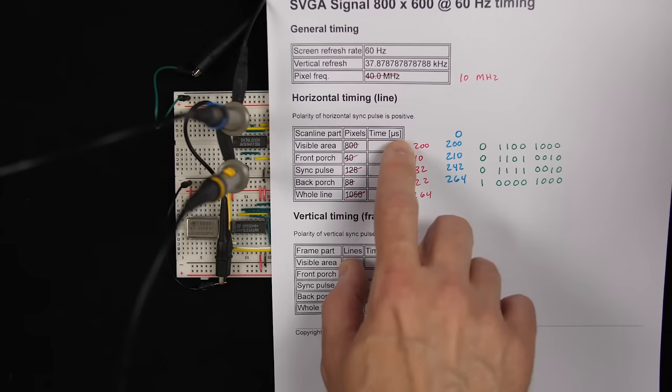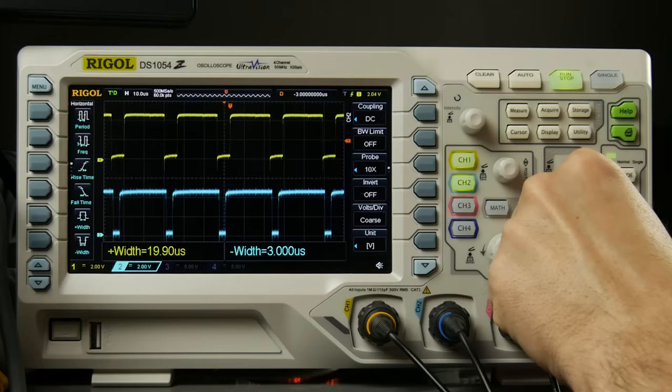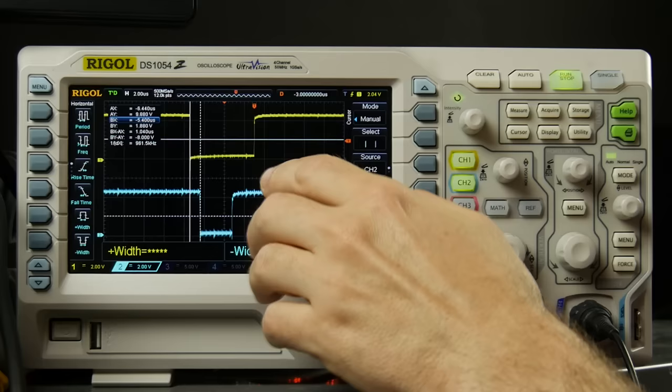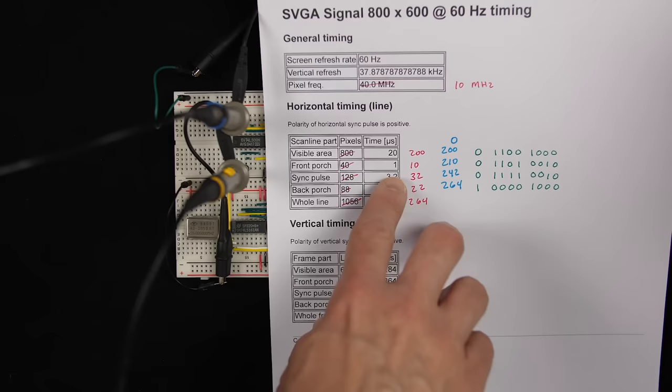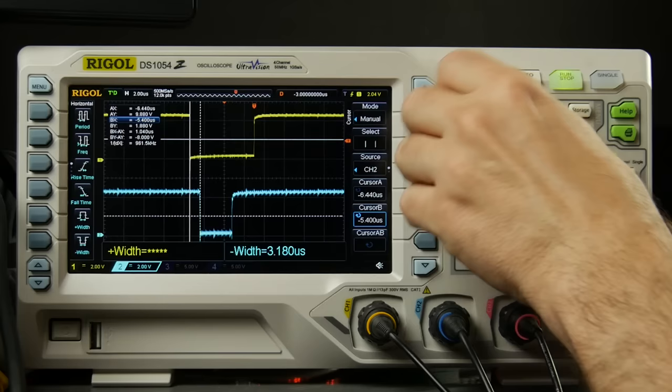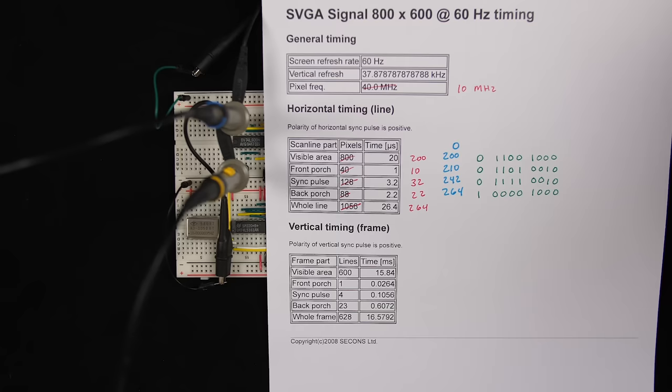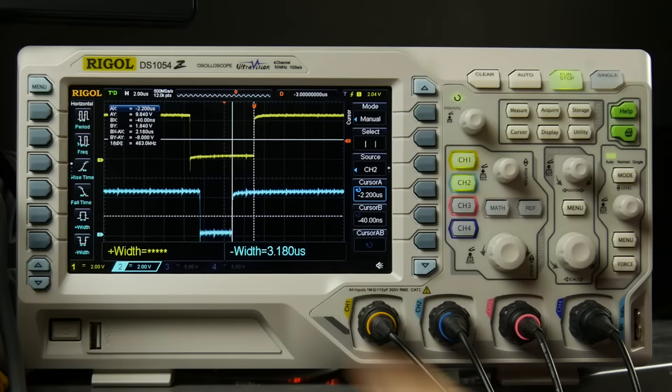We can even measure the front porch and back porch times. Zooming in and using the oscilloscope cursors: moving cursor A to the start of the blanking interval and cursor B to the start of the sync pulse, cursor A minus B is about 1 microsecond — exactly what the front porch should be. For the back porch, moving cursor B to the end of the blanking interval and cursor A to the end of the sync pulse, B minus A is 2.16 microseconds, and it's supposed to be 2.2 — close enough. So our horizontal sync signal is being generated perfectly.